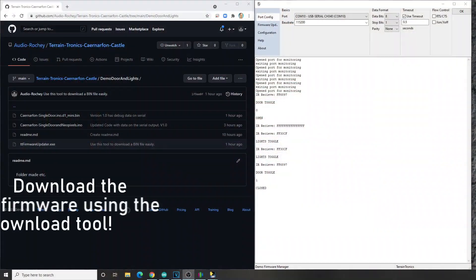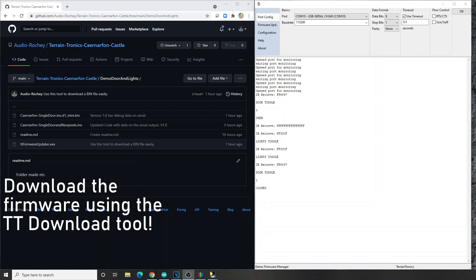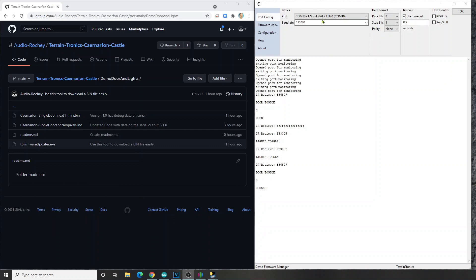Connecting your Wemos D1 Mini to your computer has been covered in this video right here. Now, once you've ensured that you've actually got a connection and that it's coming up as a serial port, then download the tool that's in our GitHub. Once you've downloaded the TerrainTronics download tool over here, you're going to drop down the port selection tool. And you should see if you've installed the driver for the Wemos D1 Mini properly, a CH340 driver. You're going to click on that, select a board rate of 115,200 and then click OK.